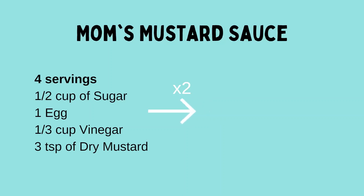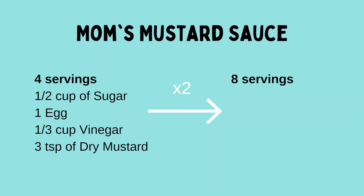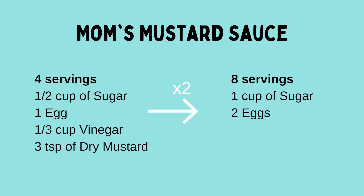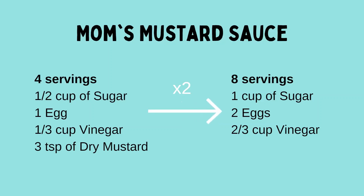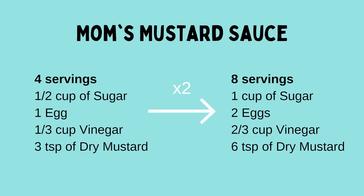Four servings times two gives me eight servings. Now let's multiply all of the ingredients by two as well. Half a cup of sugar times two — two halves is a whole — that's one cup of sugar. One egg times two is two eggs. A third cup of vinegar times two is two thirds, so two thirds of a cup of vinegar. And three teaspoons of dry mustard times two — three times two is six teaspoons of dry mustard. So we've gone through and multiplied each of the ingredients by two.